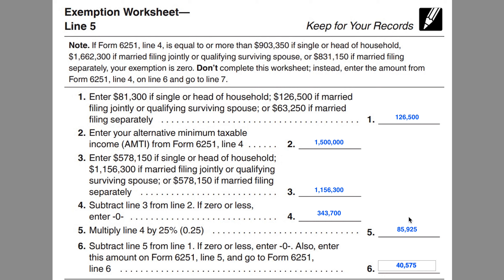That's all we have for this video. Basically, it's a straightforward line 5 exemption worksheet that you would then use to calculate your AMT on Form 6251. If you'd like, we've covered Form 6251 in depth in both a video and an article — we'll put links to those in the show notes.